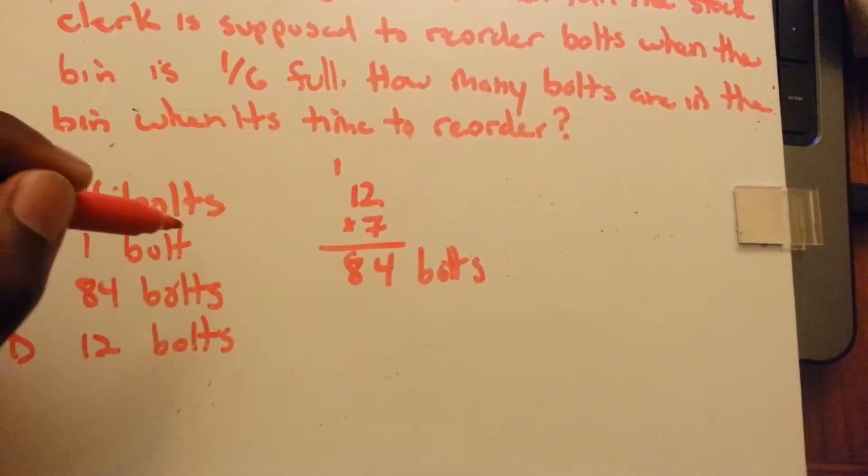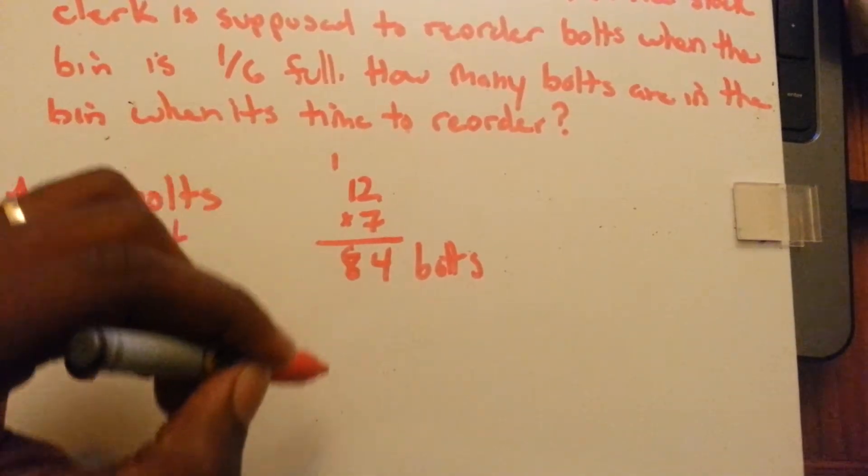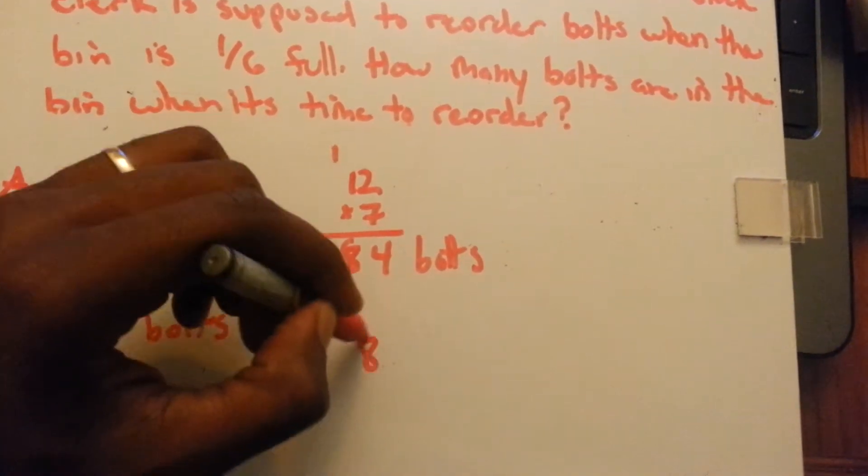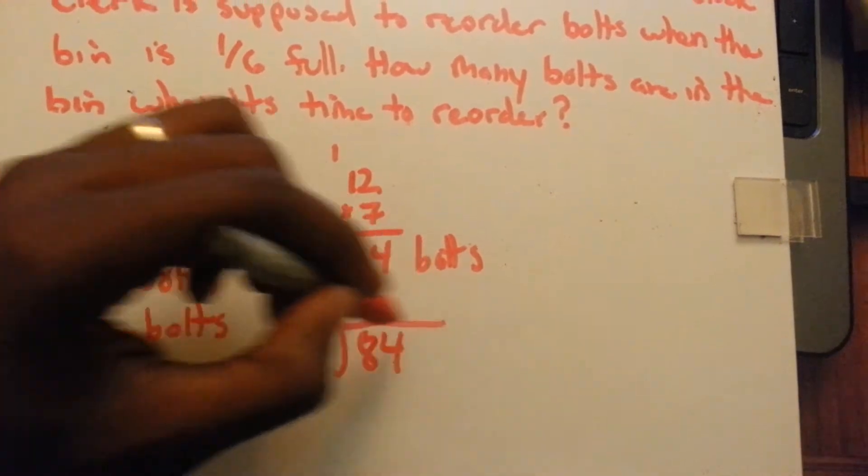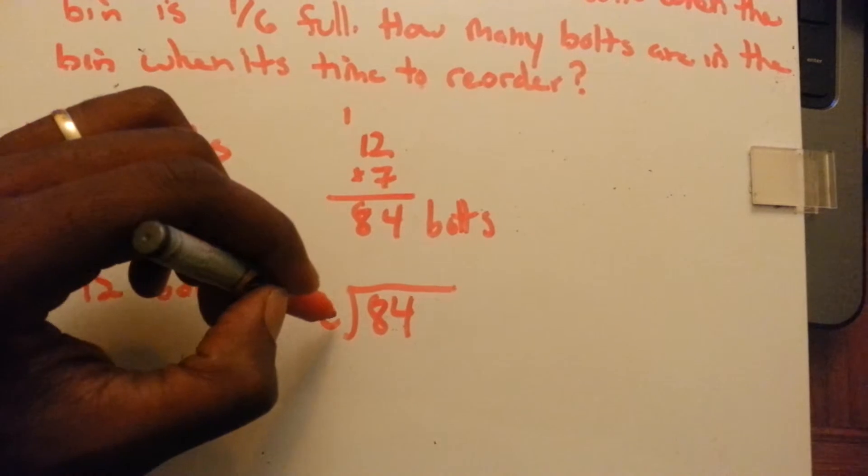And, they're supposed to reorder when there's one-sixth full. So, that would be eighty-four divided by six, to find how many are left when it's one-sixth full.